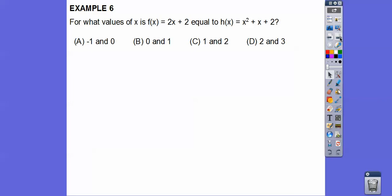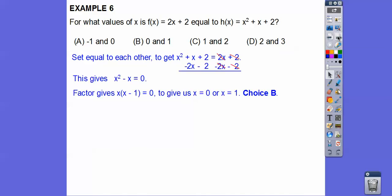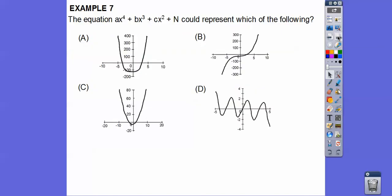All right. So what for values of x is f of x equal to x plus 2 equal to this one. So we're going to set them equal to each other and solve for x. Make it equal to 0 and then factor. And then so we get x equals 0 or x equals 1. Choice b.